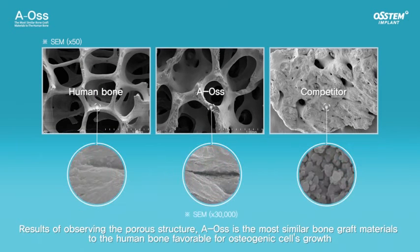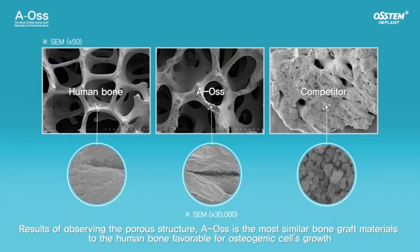The pore structure of Aeos is similar to the human trabecular bone. It is designed to play the role of an easy passage for the flow of body fluids, blood vessels, and cells. It also acts as support until new bone is regenerated.